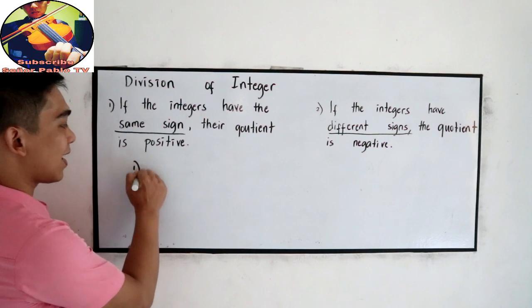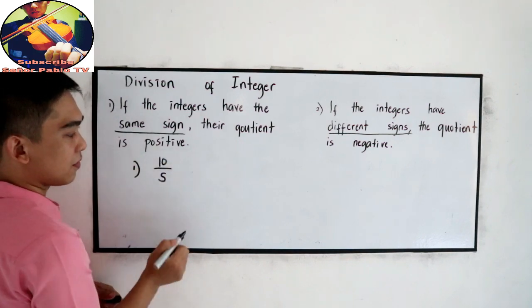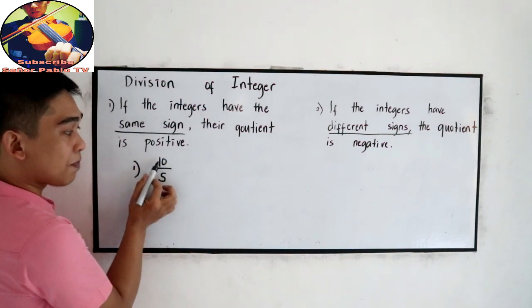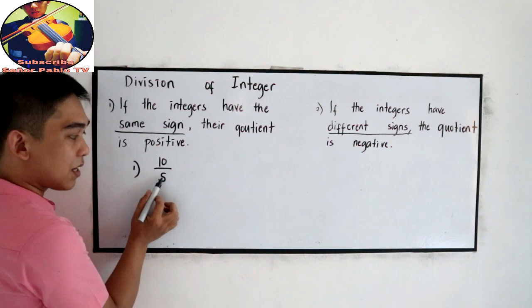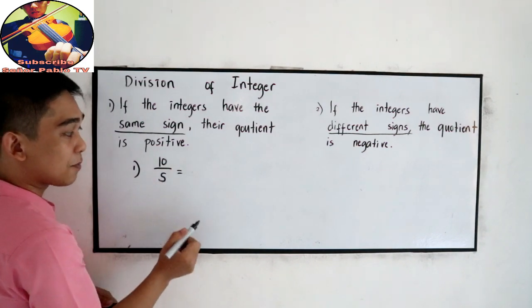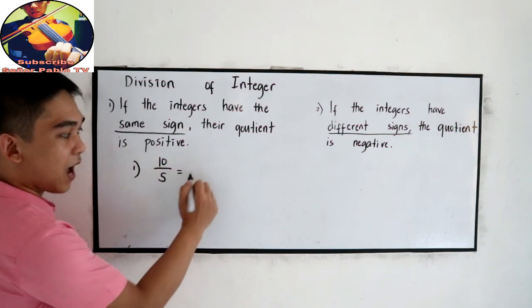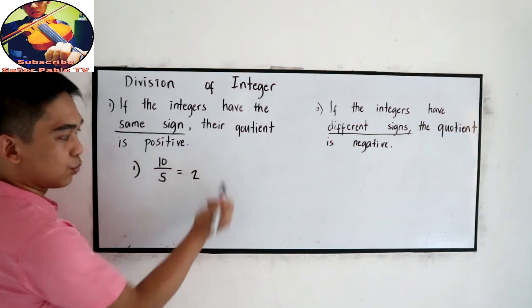Let's say 10 divided by 5. The numerator is positive, denominator positive. So that is positive — 10 divided by 5 is 2.